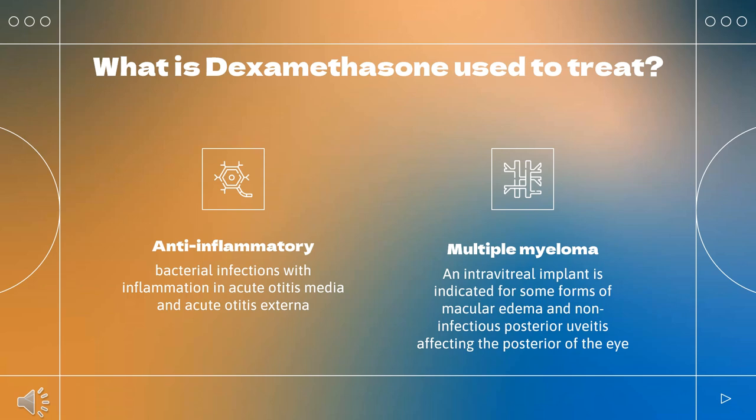Indications include collagen, dermatologic, allergic, ophthalmic, gastrointestinal, respiratory, hematologic, neoplastic, edematous, and other conditions. Oral tablets are indicated for the treatment of multiple myeloma. An intravitreal implant is indicated for some forms of macular edema and non-infectious posterior uveitis affecting the posterior segment of the eye. Various ophthalmic formulations are indicated for inflammatory conditions of the eye.